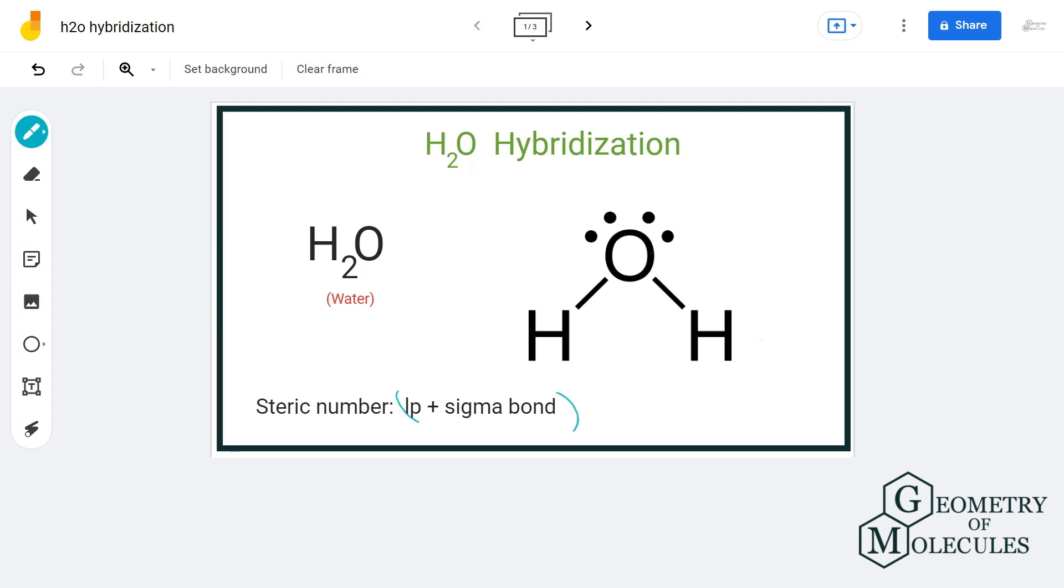Let us have a look at the Lewis structure of H2O. We can clearly see that our central atom oxygen has formed 2 sigma bonds with 2 hydrogen atoms and also has 2 lone pairs of electrons on it.